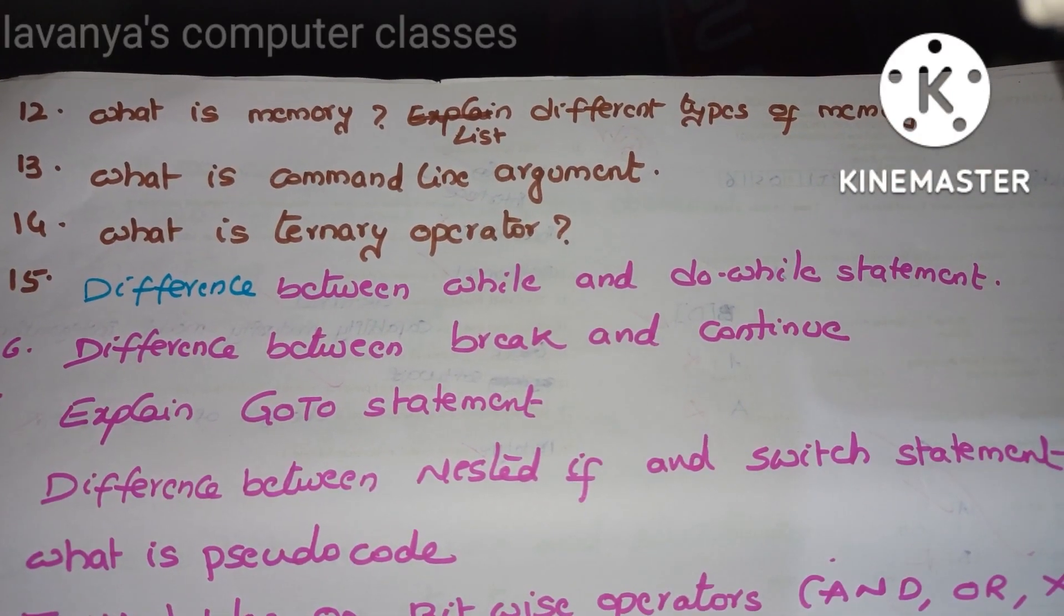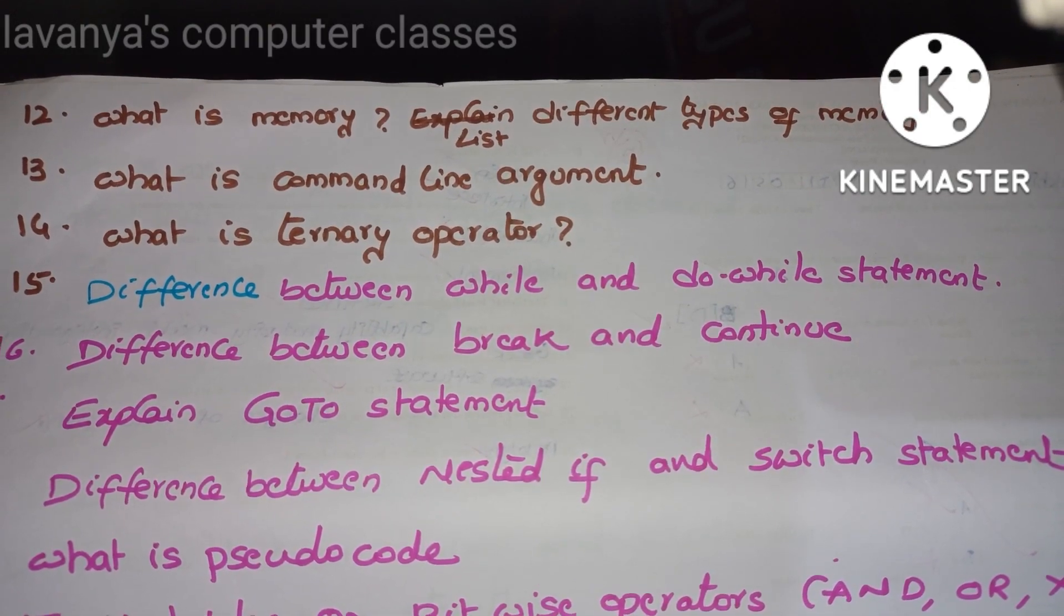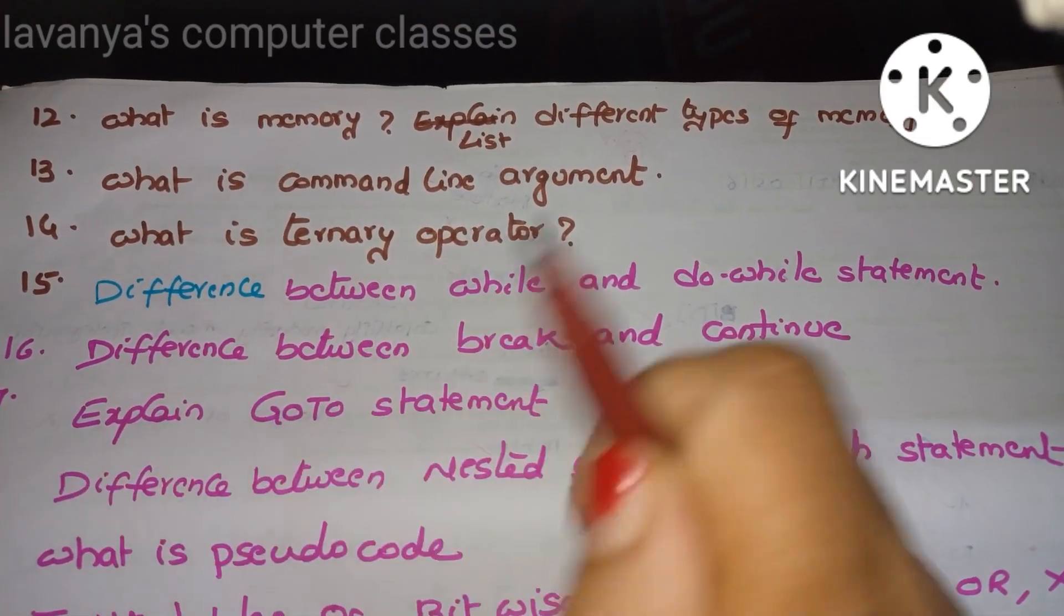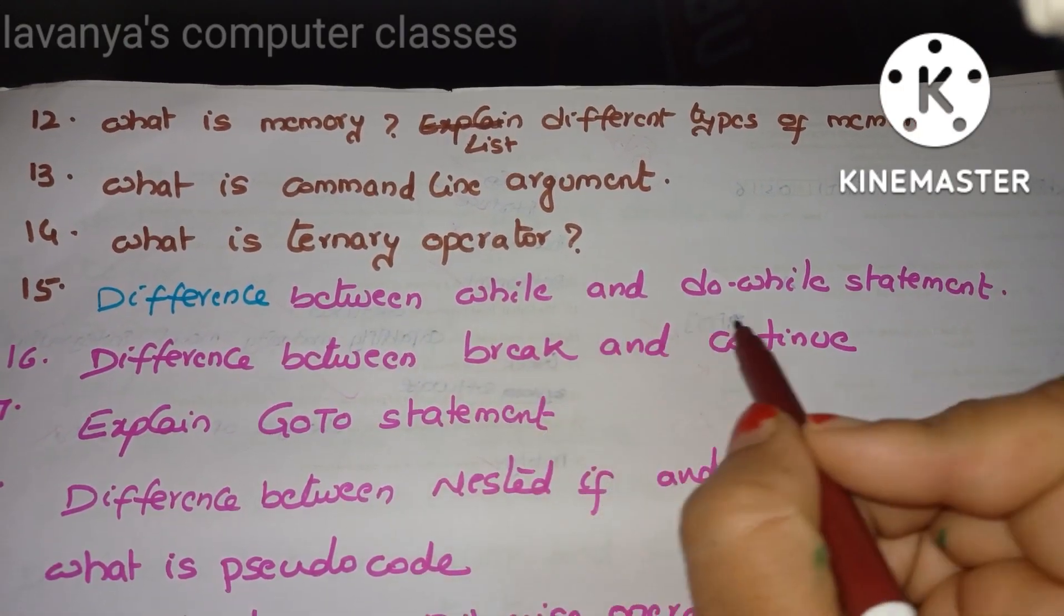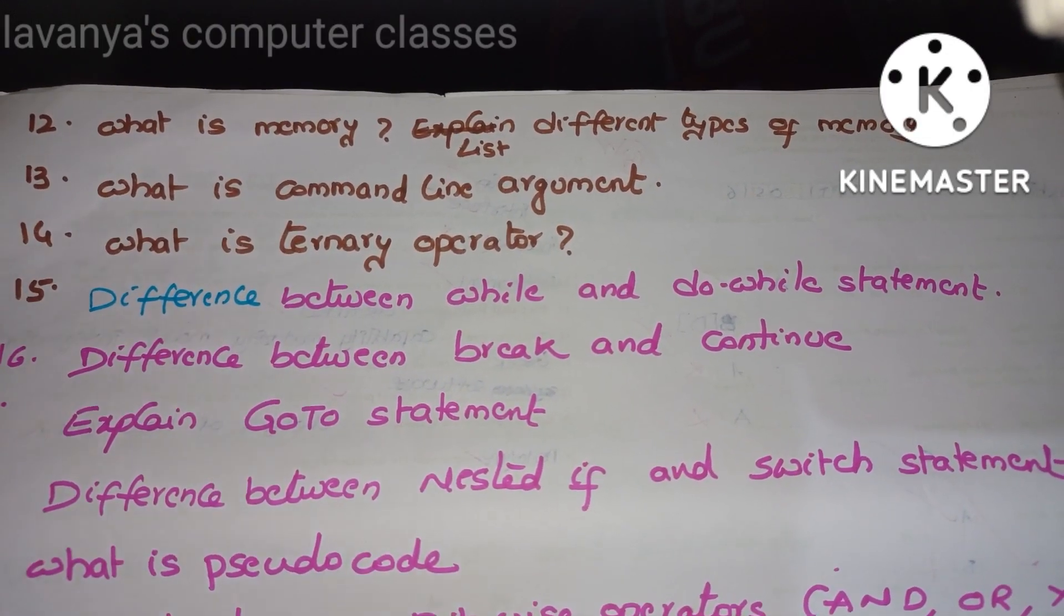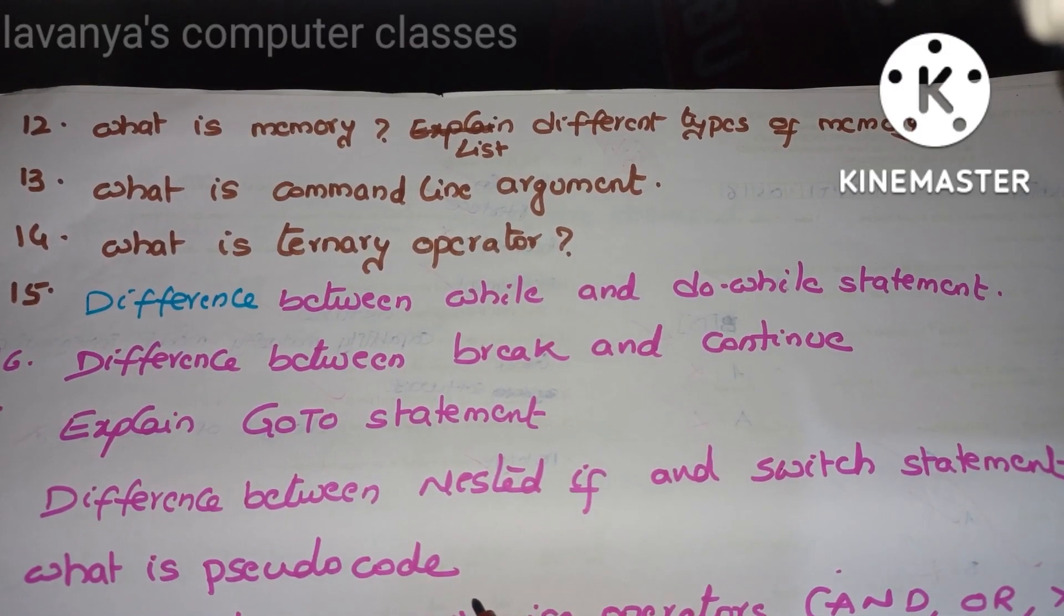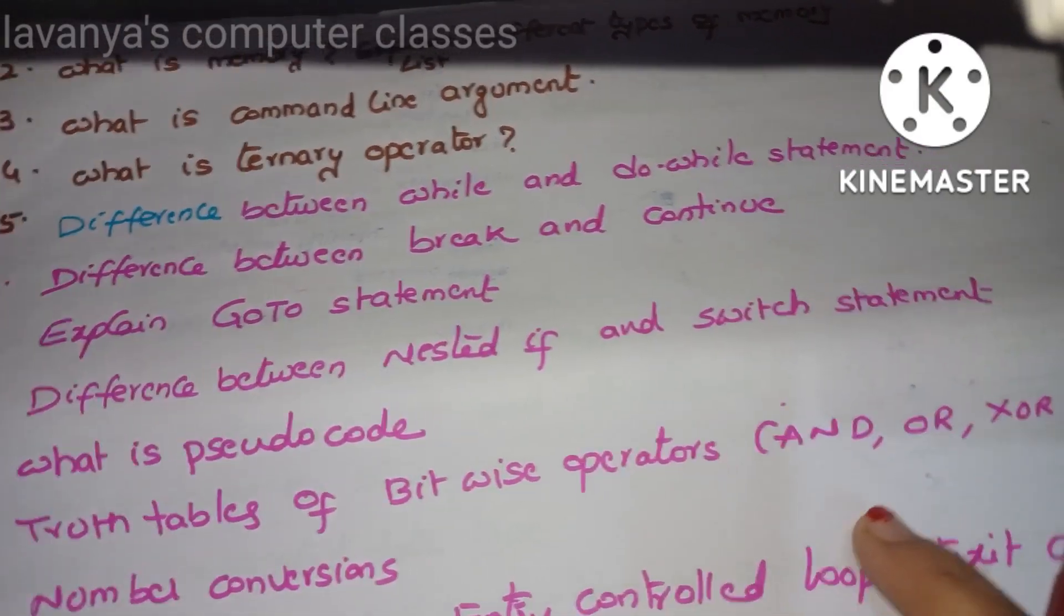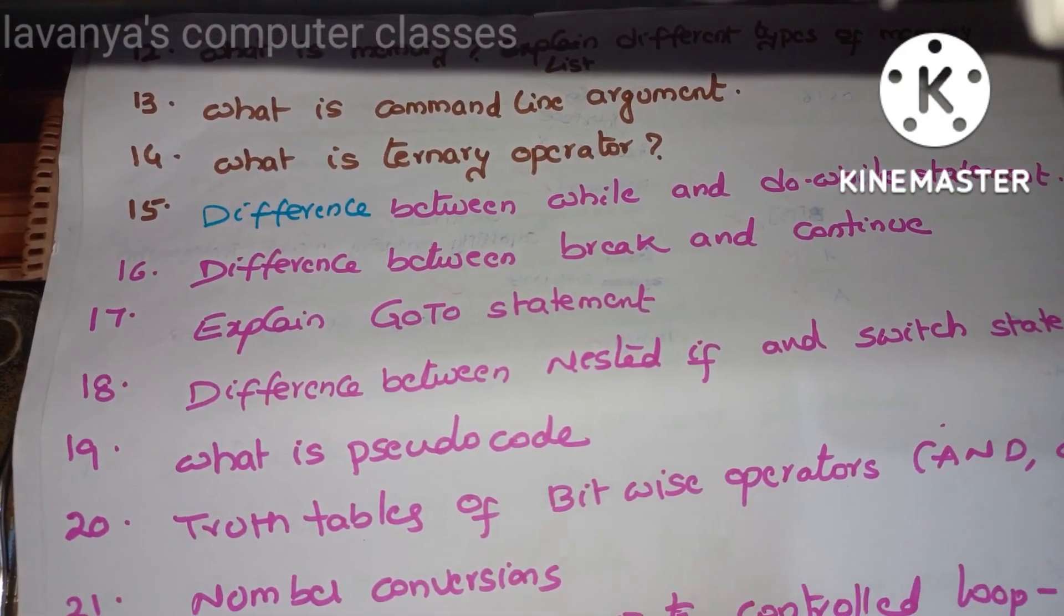Some more important questions are: what is memory? List out different types of memory, just definition of memory and what are the different types of memories. Next, what is command line argument? What is ternary operator? It is coming under operators also. Difference between while and do-while statements, difference between break and continue statement. Explain about goto statement, difference between nested if and switch statement. What is pseudocode? Just definition and write the truth tables of bitwise operators: AND, OR, exclusive OR.